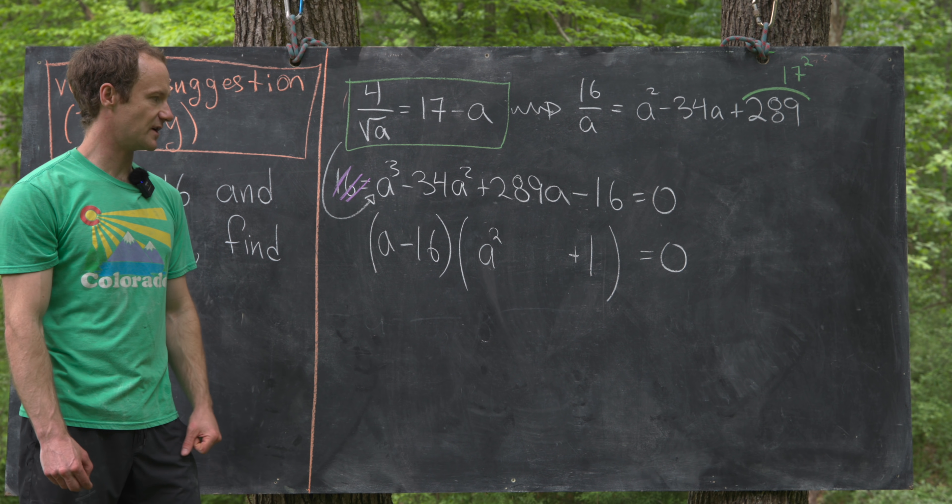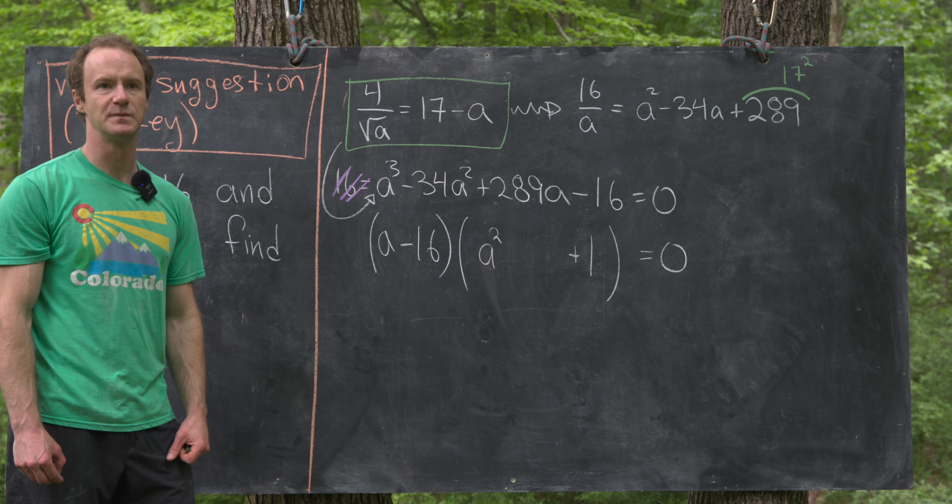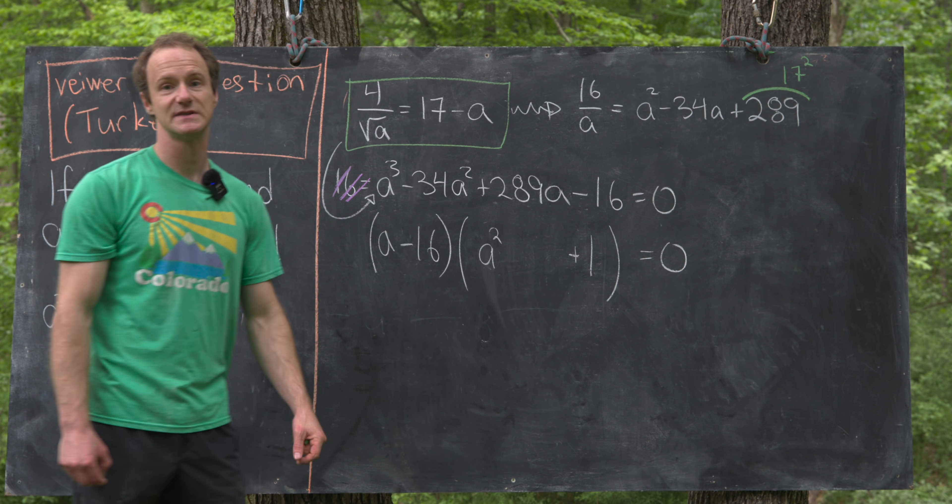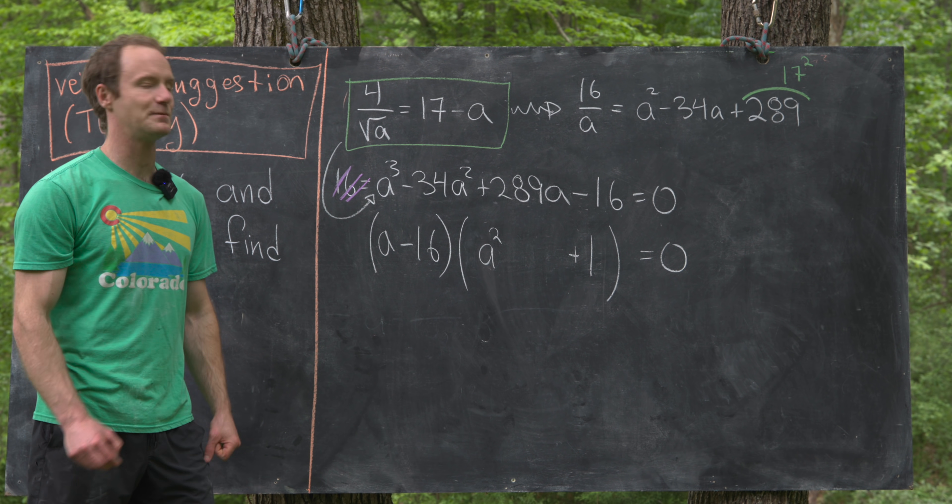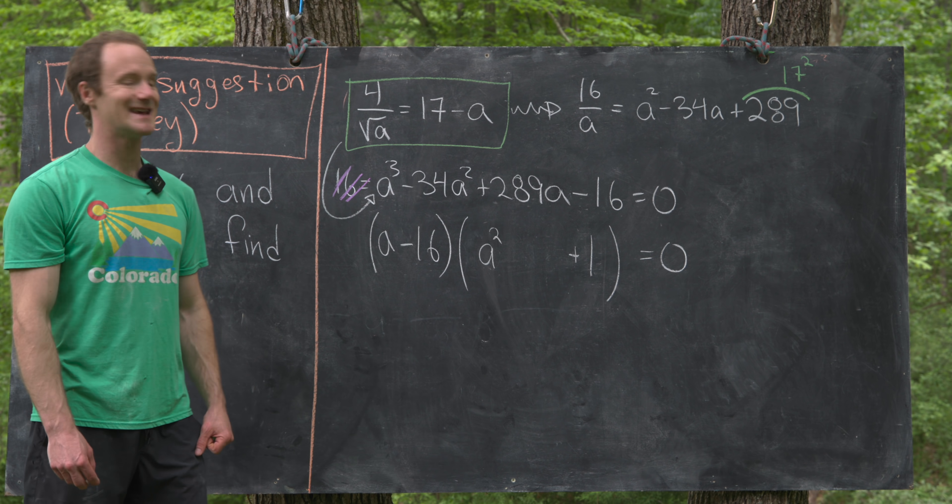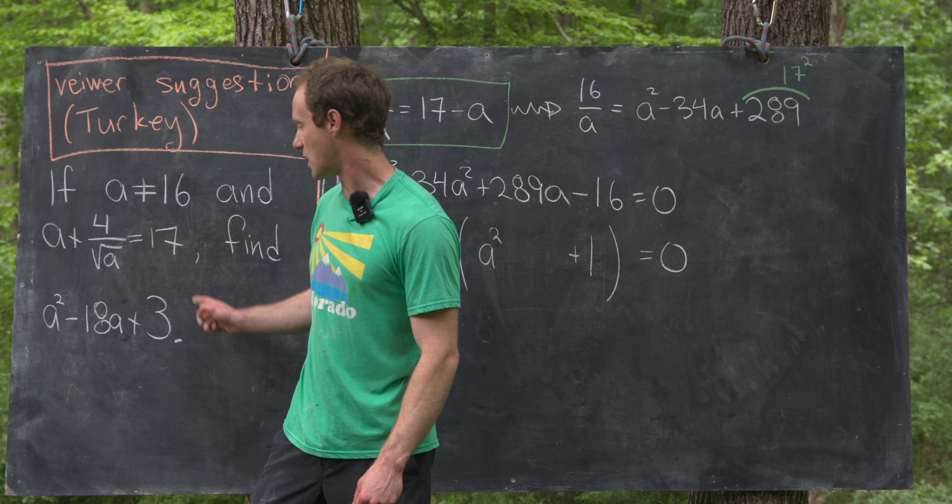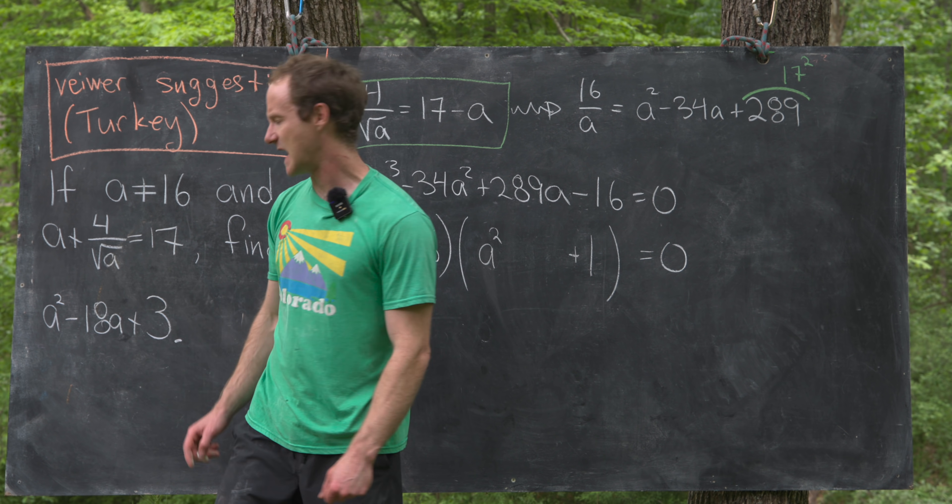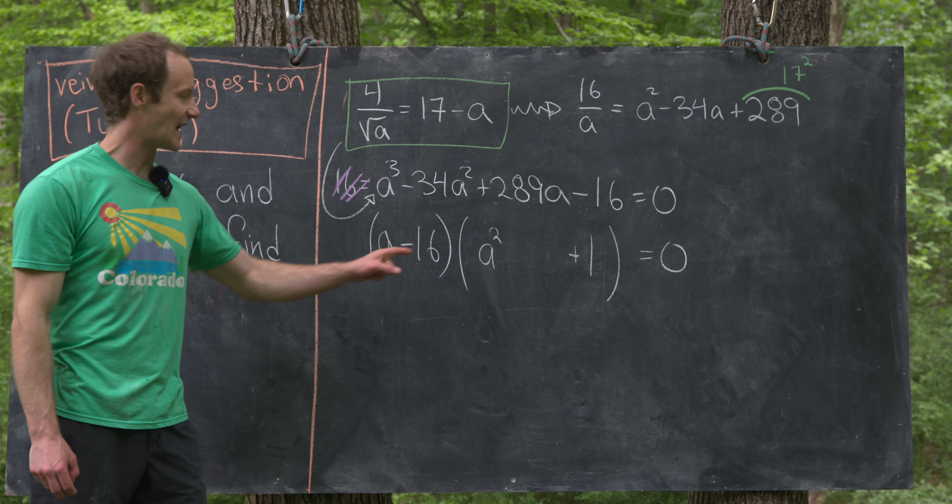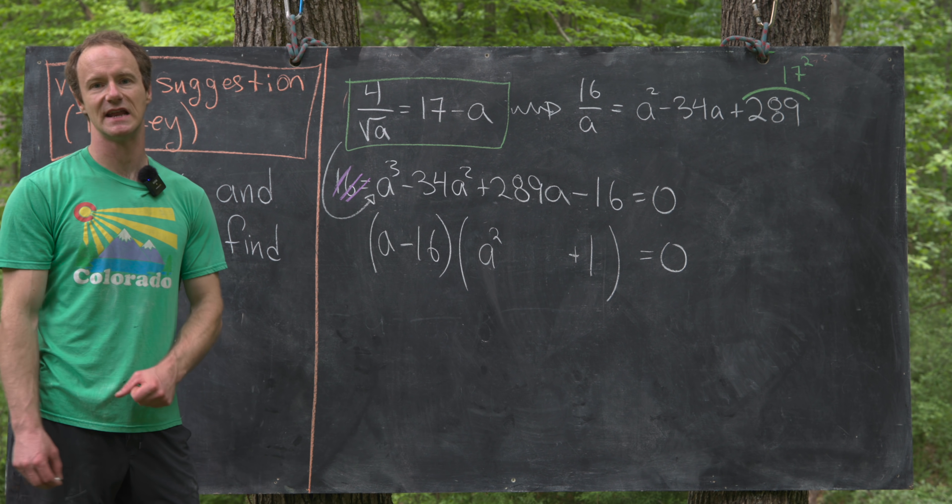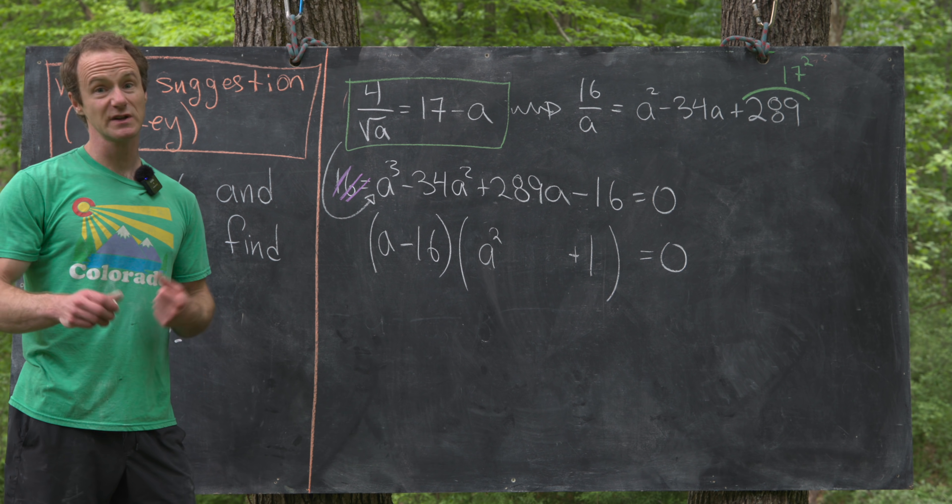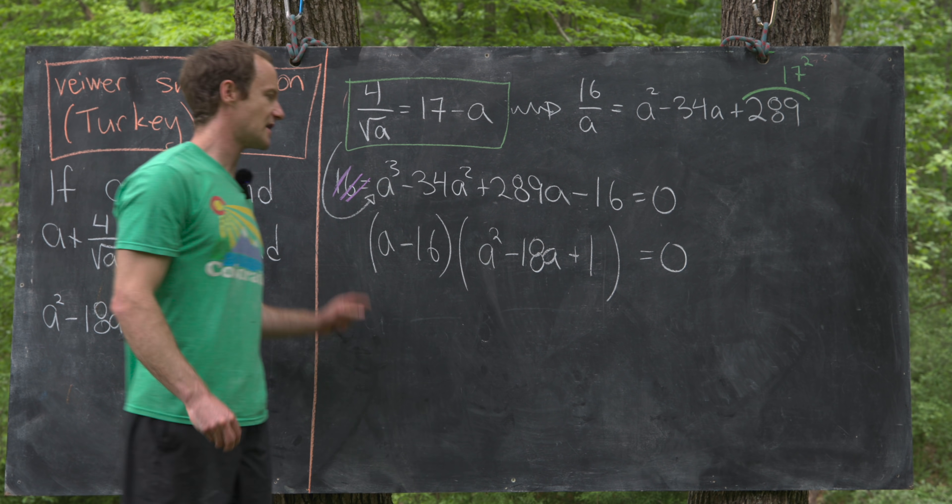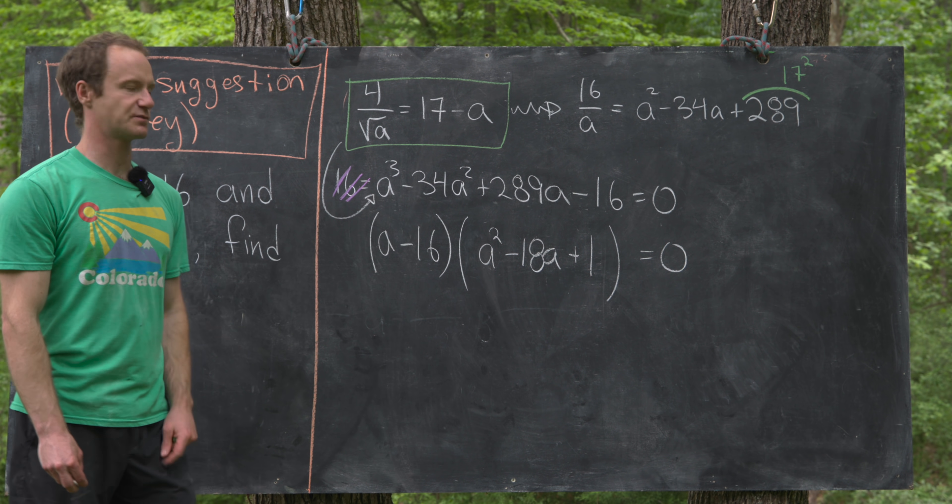Now we just have to figure out the linear term, so the a to the first power term. We could do this a number of different ways. We could set this equal to maybe some variable times a, multiply it all out, and then solve some equation. Or we could take inspiration from the fact that we're looking for this polynomial, this a squared minus 18a plus 3, and look at this minus 18 and think, well, that would be nice if this factored as a squared minus 18a plus something. And then that's really just a guess. You would have to check that, but indeed it does work. So if we put minus 18a here and multiply it all out, you'll see that you get this expression up here.